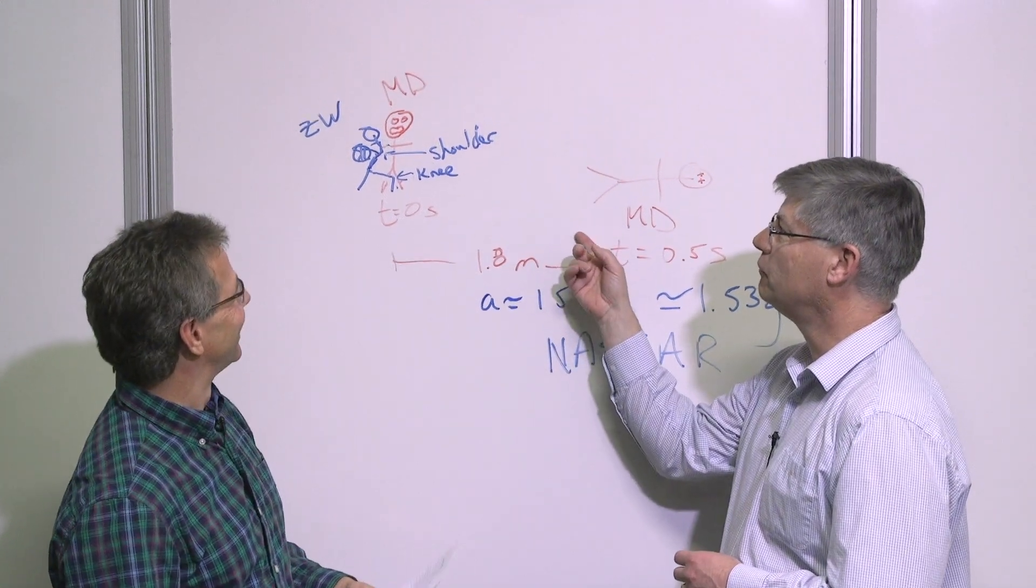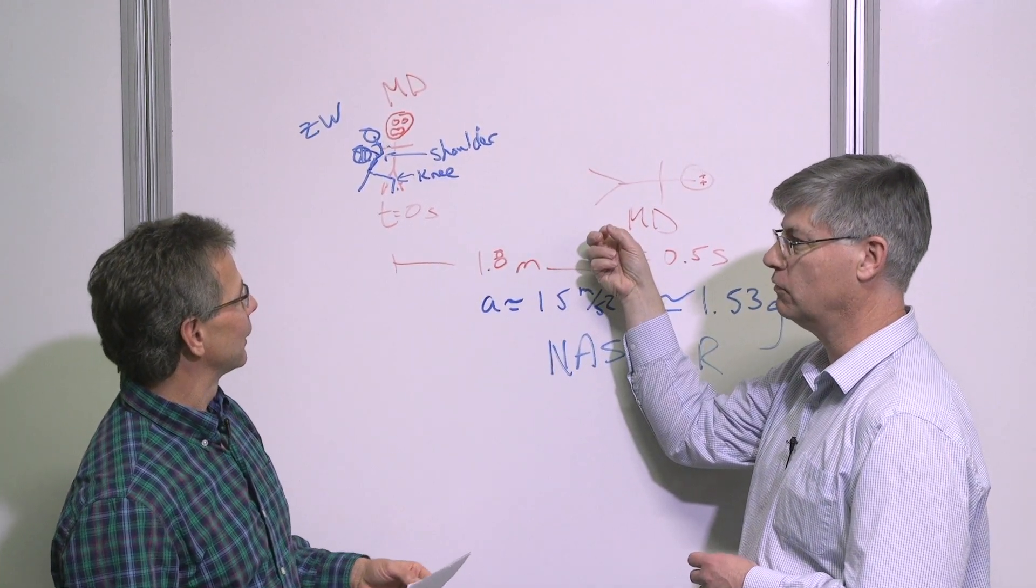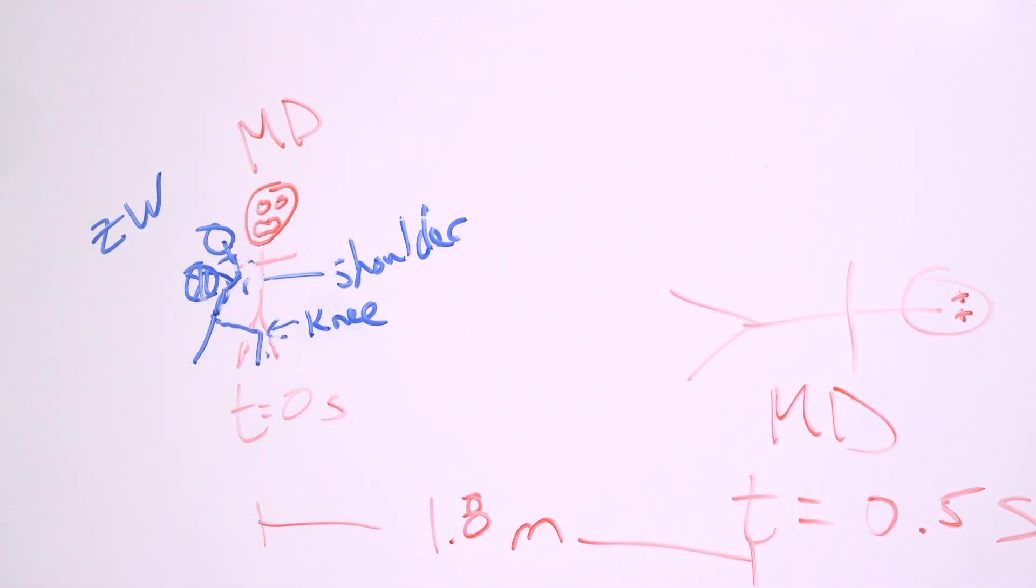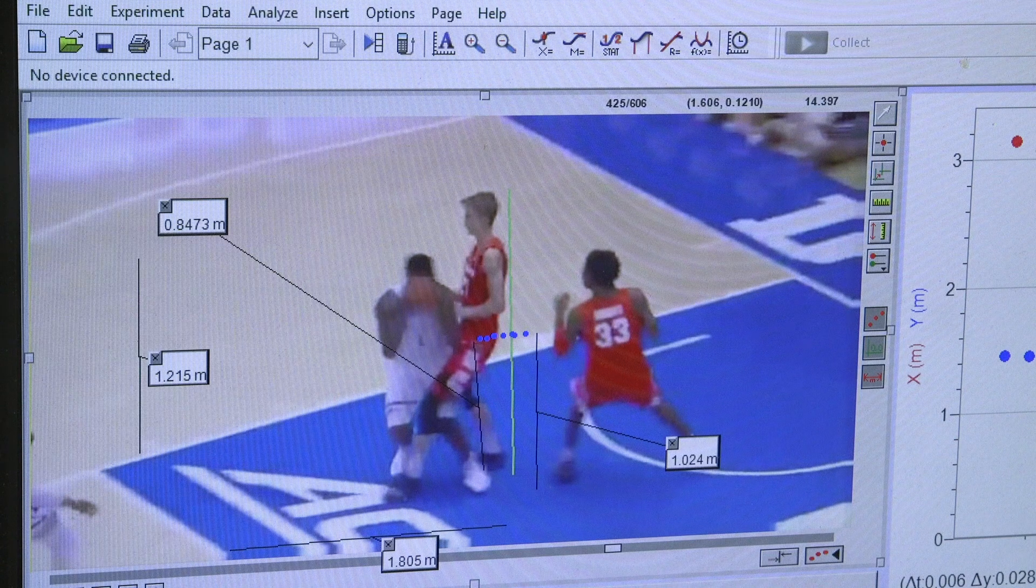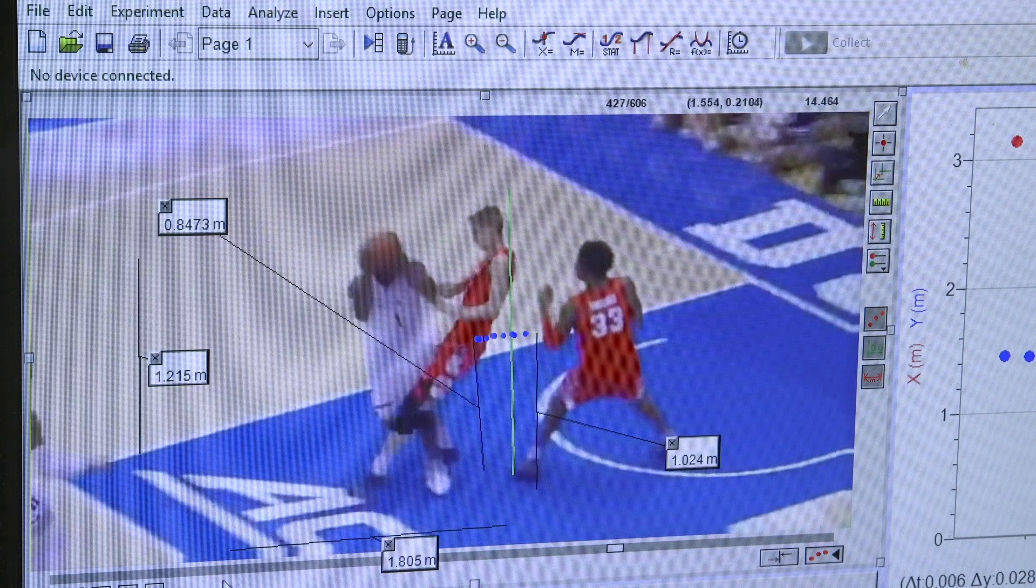Part of what hurt for Marek was not just the collision, but the collision with the floor. The floor doesn't give way, only his body gives way. And that collision happens in a much smaller amount of time. And that's what really hurts.